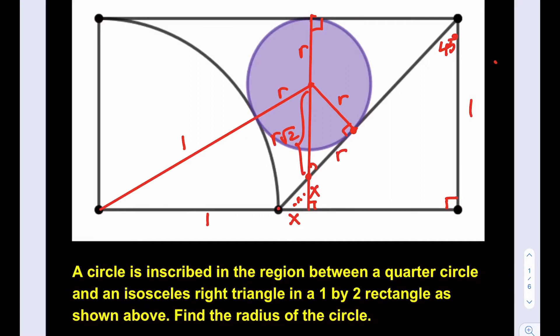That's helpful because the height of the rectangle we can write as x plus r√2 plus r, and that whole thing equals 1. So that's one equation we're going to use. We can actually simplify this a little bit.